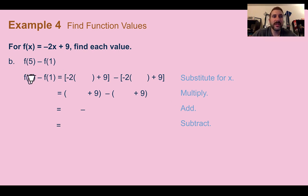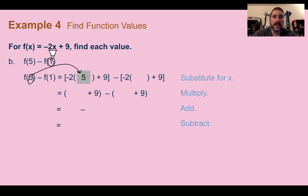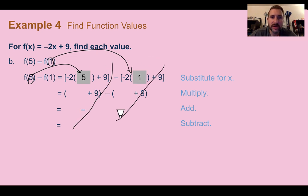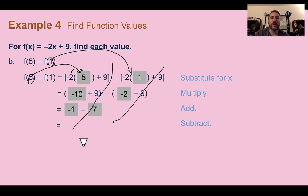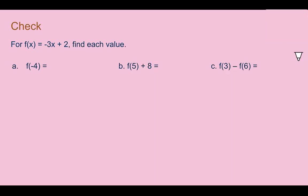For part b, using the same function, find f of 5 minus f of 1. We substitute 5 in first: negative 2 times 5 is negative 10, plus 9 gives negative 1. Then substituting 1: negative 2 times 1 is negative 2, plus 9 gives 7. Finally, negative 1 minus 7 is negative 8.